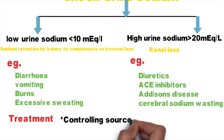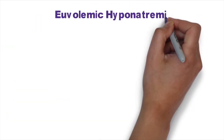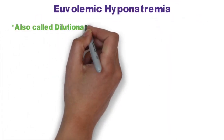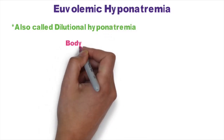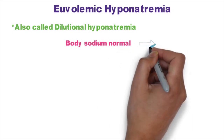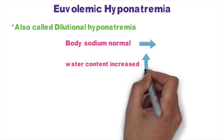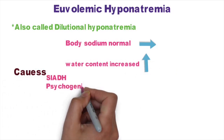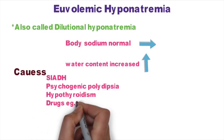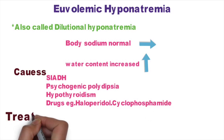The treatment of hypovolemic hyponatremia is controlling the source of sodium loss and intravenous normal saline infusion. Another type is euvolemic hyponatremia, also called dilutional hyponatremia. In dilutional hyponatremia, body sodium content is normal but water content is increased. It can be due to SIADH, psychogenic polydipsia, hypothyroidism, or drugs like haloperidol or cyclophosphamide.